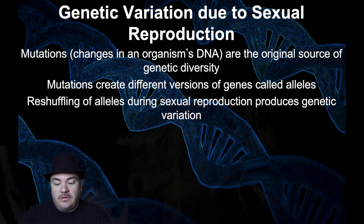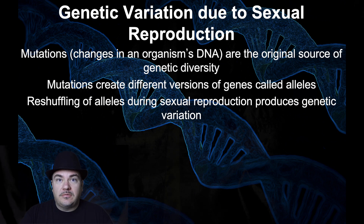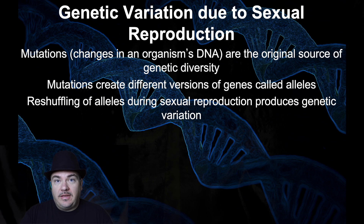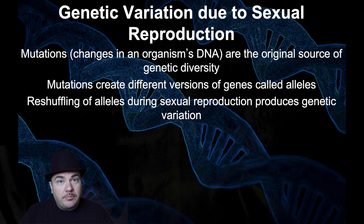Mutations create different versions of genes called alleles. For example, we have an eye color gene, but there are different versions of that eye color gene — there is a blue eye allele, the green eye allele, the brown eye allele. They're all the same gene, just different versions of that gene. A gene is a piece of DNA, a sequence of the base pairs, the letters A, T, C, G. The difference between the blue eye allele and the brown eye allele is the sequence of the DNA — the A, T, C, G — are a little bit different. So why do we not all have brown eyes? Because there was a mutation to the DNA, a change in that gene, that created a different version, a different allele — and that's how we have the blue eye allele, for example.